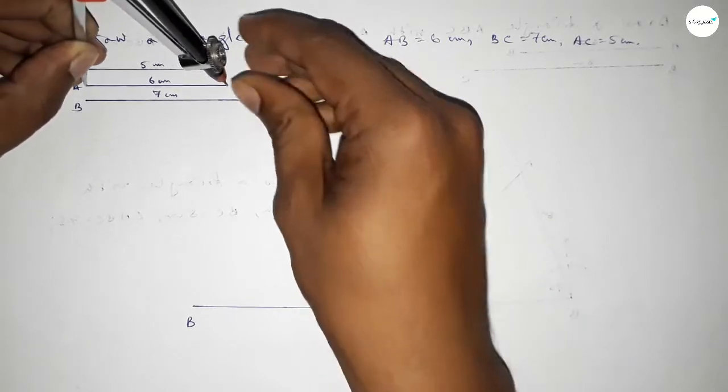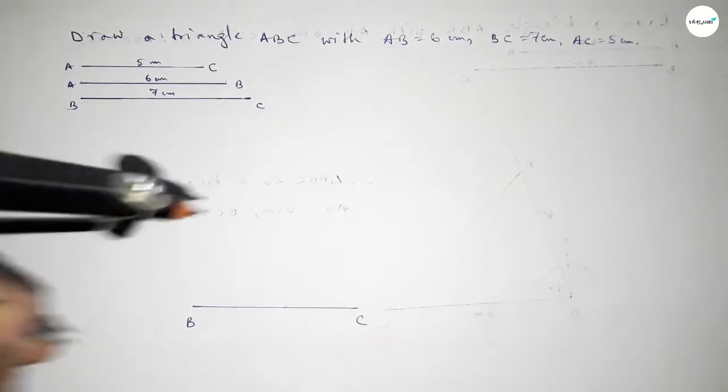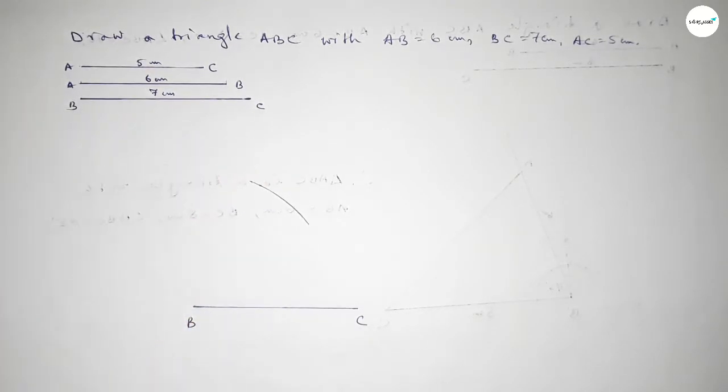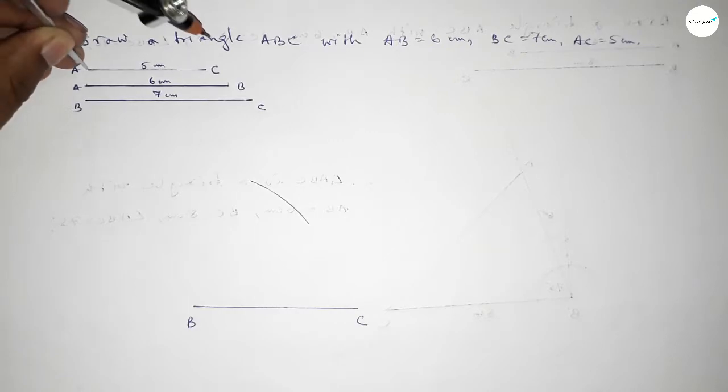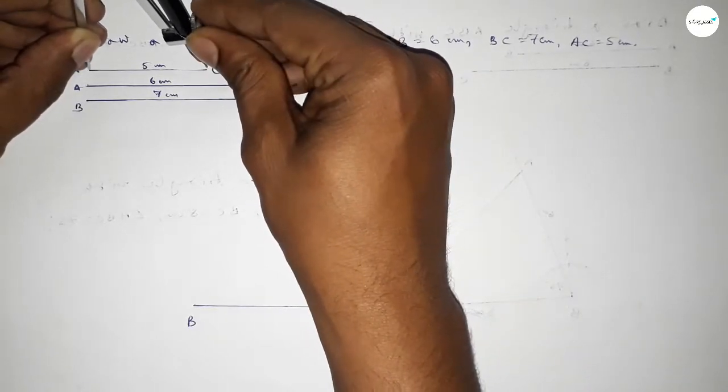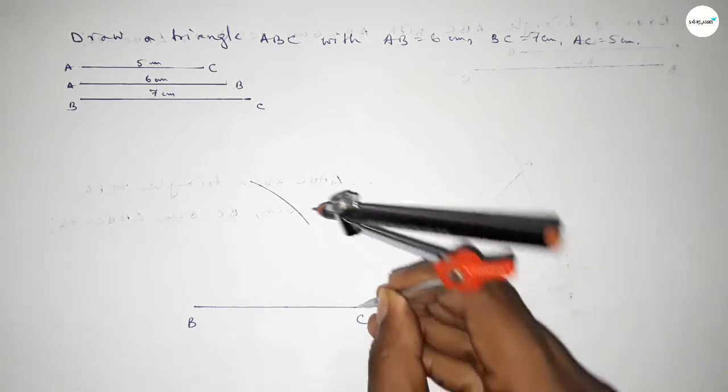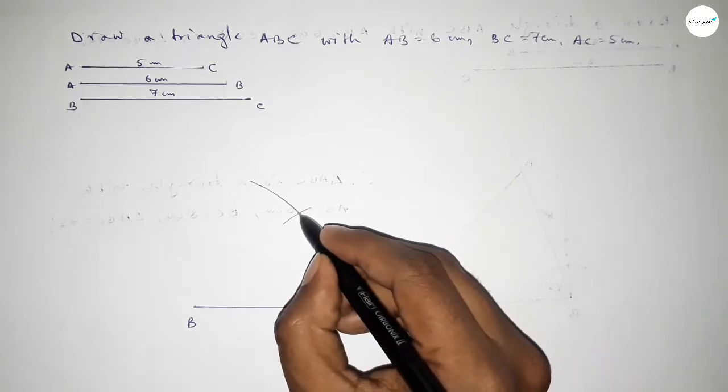Now taking the length first AB, 6 centimeter, and put in the compass here and drawing here arc. Again, taking the length AC by using compass, 5 centimeter, and putting the compass here and cut here. So both the curves intersect at a point A.